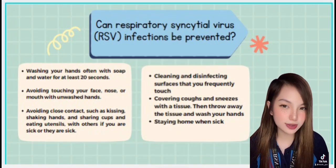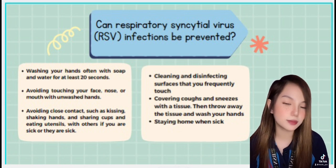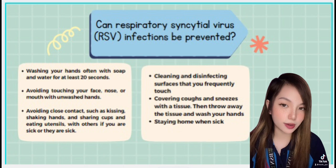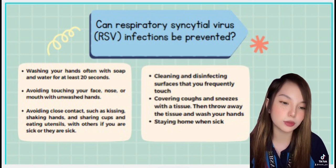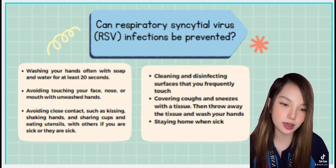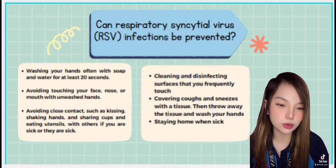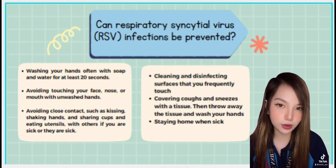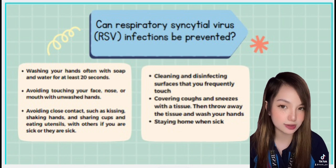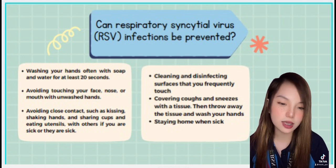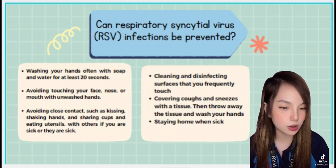Can respiratory syncytial virus be prevented? There is no vaccine for RSV infection, but you may be able to reduce your risk of getting or spreading RSV by washing your hands often with soap and water for at least 20 seconds, avoiding touching your face, nose, or mouth with unwashed hands, and avoiding close contact such as kissing, shaking hands, and sharing cups and eating utensils with others if you or they are sick.